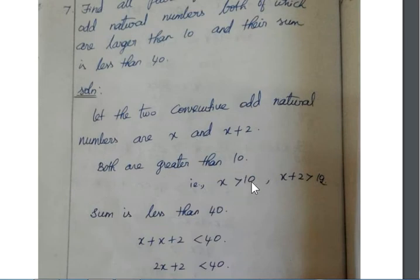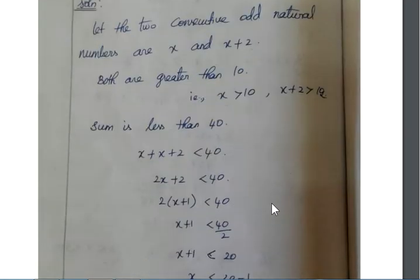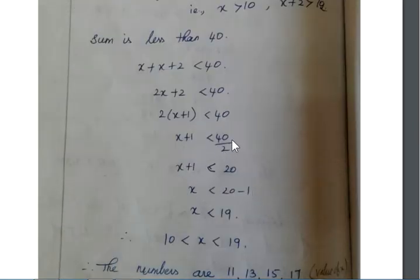The sum is less than 40, so x plus x plus 2 is less than 40. This gives us 2x plus 2 less than 40, which simplifies to 2(x plus 1) less than 40, so x plus 1 less than 20, therefore x less than 19. Alternatively, 2x less than 38, so x less than 19.